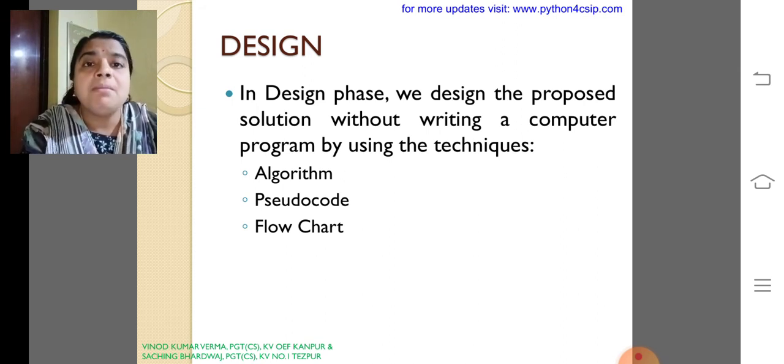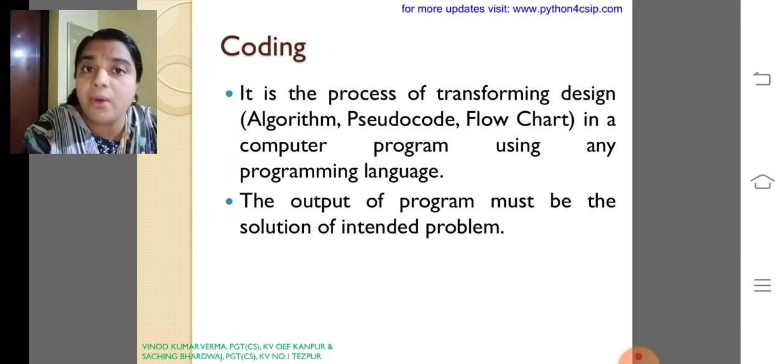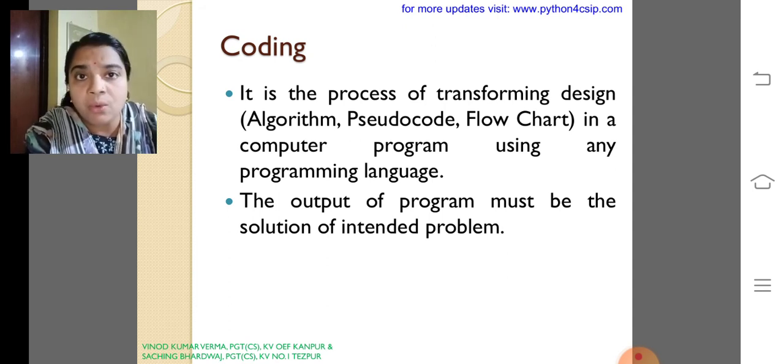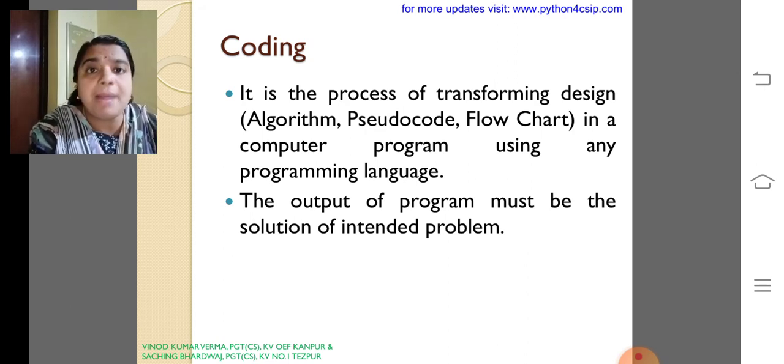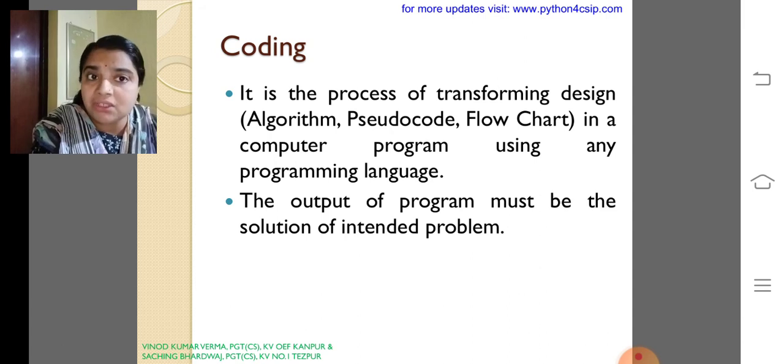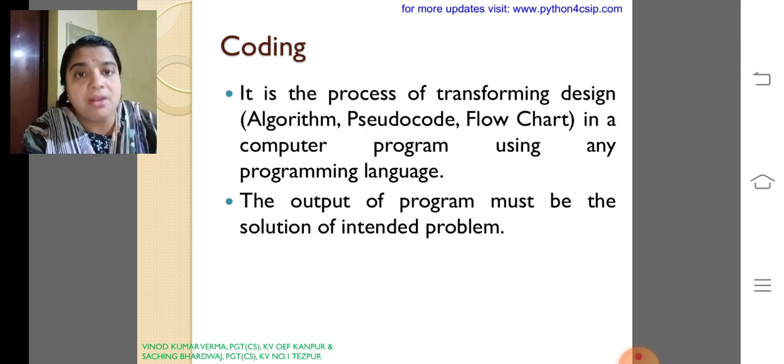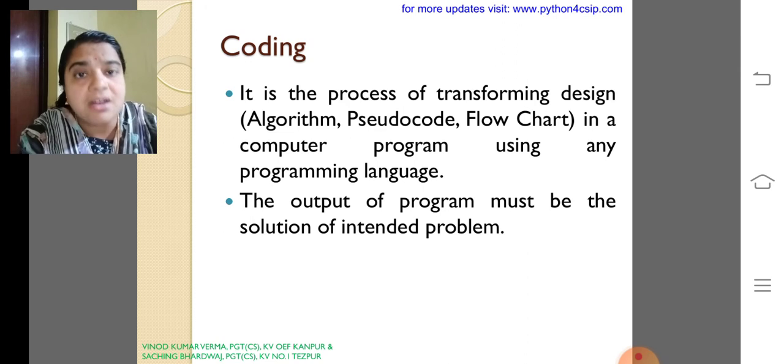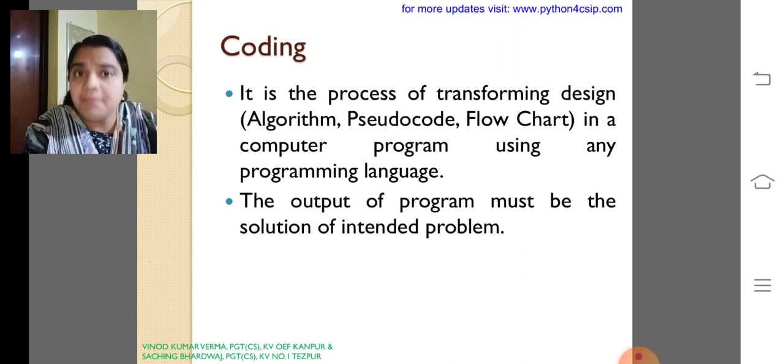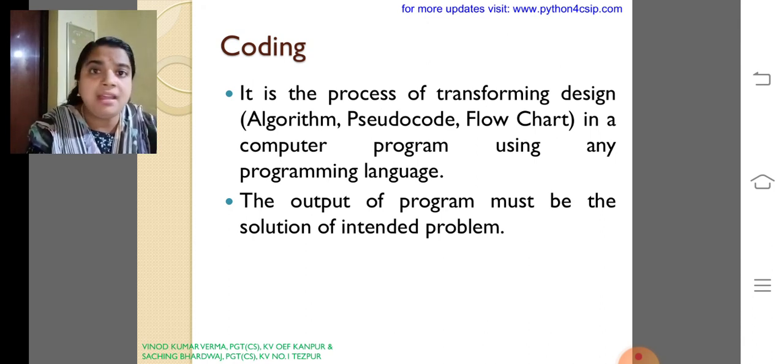We will discuss more about algorithm, pseudo code and flow chart in the upcoming modules. The next phase is coding. It is the process of transforming the design into a computer program using any programming language. Here we have to use only Python. The output of the program must be the solution of intended problem. My dear children, after designing a problem solution using algorithm or flow chart or pseudo code, we need to write or we need to convert that particular implementation through a programming language. Here we have to use only Python language.